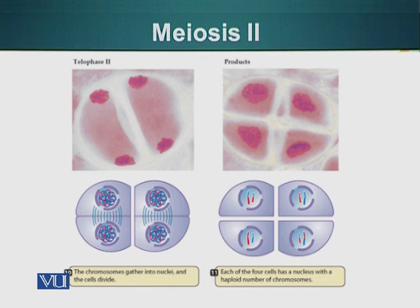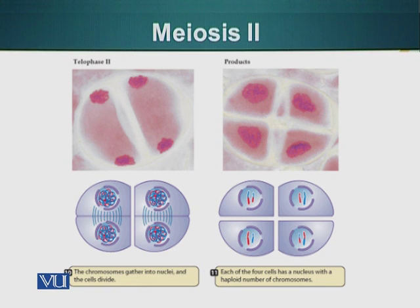The important features to note are that we have reduced the number of chromosomes present in the original parent cell by half. Also, the total genetic material is the same but the arrangement is different. The arrangement is different due to crossing over — when we saw the tetrads, there was a crossing over between the two homologous chromosomes, and this gives rise to genetic diversity.